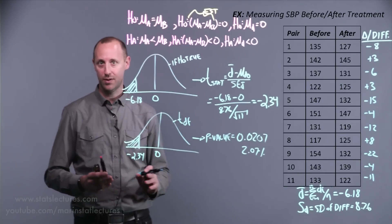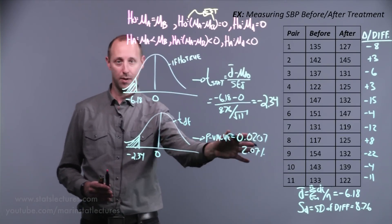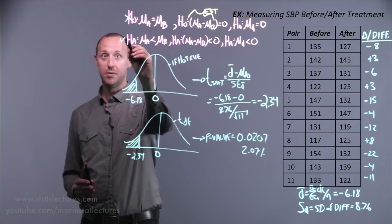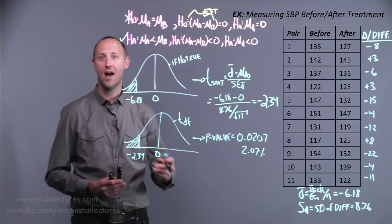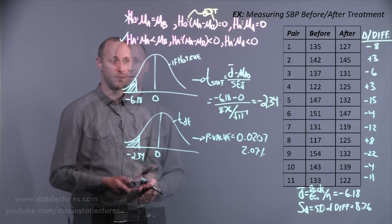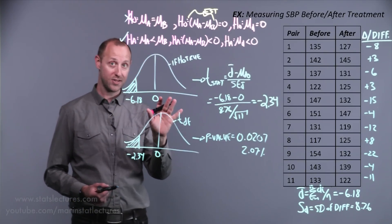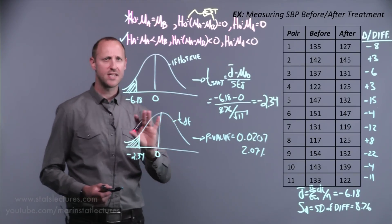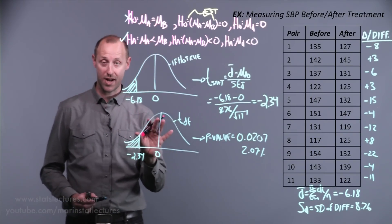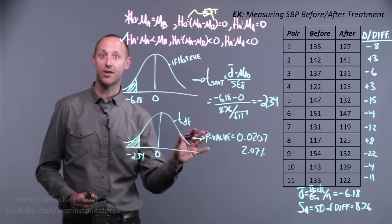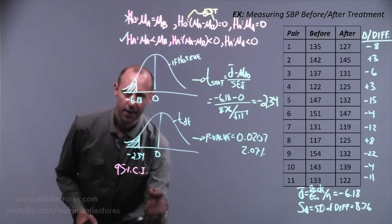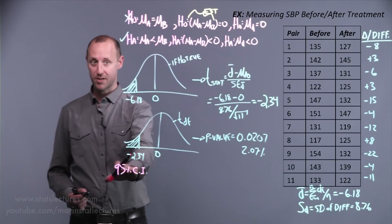We can use the p-value to make a decision. Here, the p-value is quite small, so we reject the null hypothesis and say we have evidence to believe the alternative is likely true — there is a statistically significant decrease in blood pressure after receiving treatment. As mentioned, it's always nice to pair a hypothesis test with a confidence interval, since they give us slightly different information about the same problem. A reminder: we build a confidence interval as our estimate plus or minus about two standard errors, which corresponds to 95% confidence.